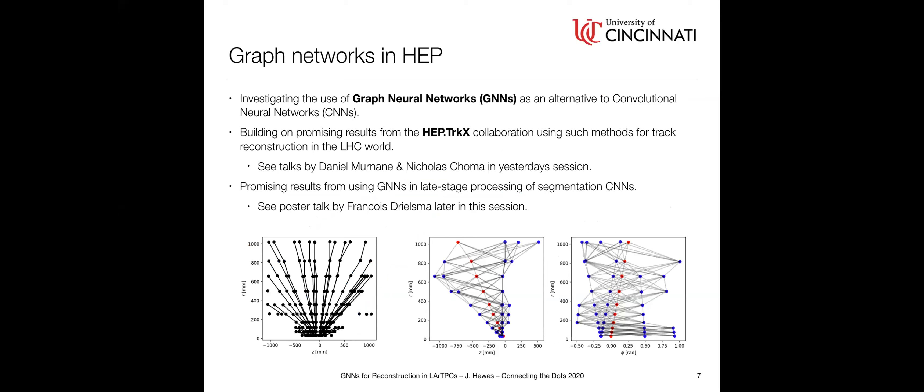The motivation for this is the HEPTRICS investigations, which have evolved into Exatrkx. A lot of promising results in the LHC world using these methods for track reconstruction. You can see some outdated plots at the bottom from the HEPTRICS paper, which show using edge classification to draw tracks in a radial detector, and on the right node classification to draw individual tracks. If you look at Daniel and Nicholas's talks from yesterday's session, you'll see updated versions of this work. This isn't the only talk on graphs and LArTPCs. Francoise is going to talk later about using GNNs at a later stage in processing after applying a segmentation CNN. This is focused more on using graph networks for lower level reconstruction.